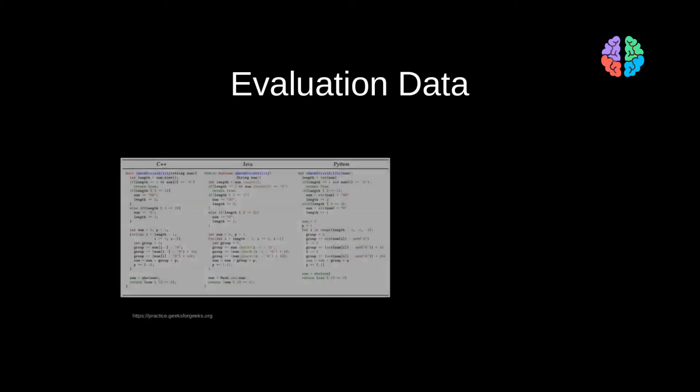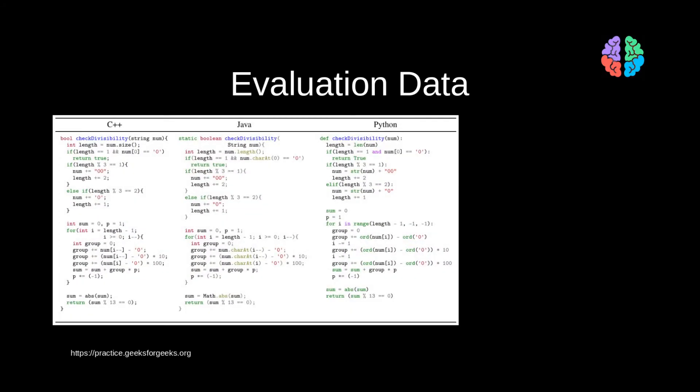Now, we managed to train our algorithm without any parallel code. But to evaluate the transcoder, we do need some parallel code. For this, they use the Geeks4Geeks platform and curate a test set with parallel functions in C++, Java, and Python.